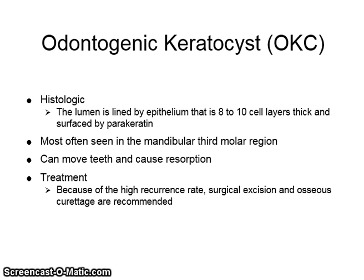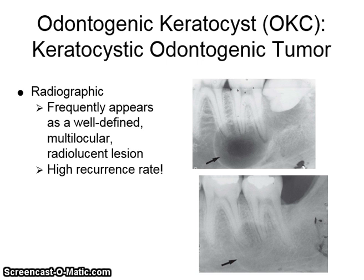An odontogenic keratocyst, or OKC: histologically, the lumen is lined by epithelium that is 8 to 10 cell layers thick and is surfaced by parakeratin. It is most often seen in the mandibular third molar region and is very aggressive — it can move teeth and cause resorption. Because of its high recurrence rate, surgical excision and osseous curettage are recommended. Radiographically, it frequently appears as a well-defined multilocular radiolucent lesion.